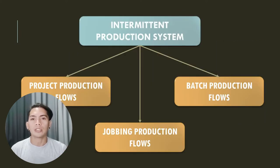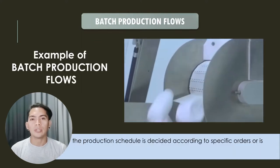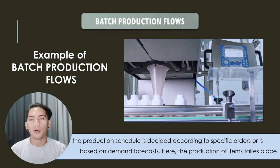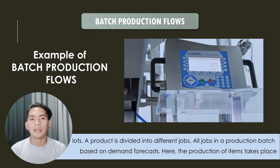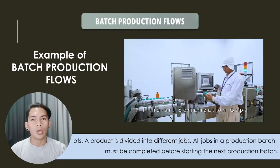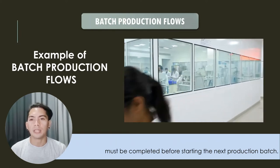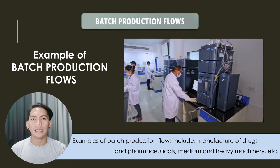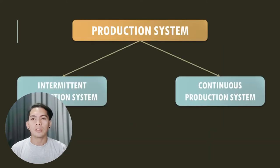The third type of intermittent production system is batch production flows. In batch production flows, the production schedule is decided according to specific orders or based on demand forecasts. The production of items takes place in lots, and a product is divided into different jobs. All jobs in a production batch must be completed before starting the next production batch. Examples of batch production flows include manufacture of drugs in pharmaceuticals, medium and heavy machinery, and so on.